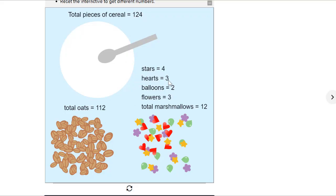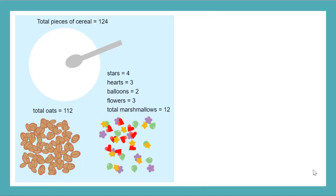Or we can do part-part-whole with just marshmallows, where we count the total number of marshmallows as the whole and the parts to be all the different kinds of marshmallow shapes. For example, what is the ratio of star marshmallows to total marshmallows? My stars are 4 and my total marshmallows are 12, so I'm going to write a ratio of 4 to 12.